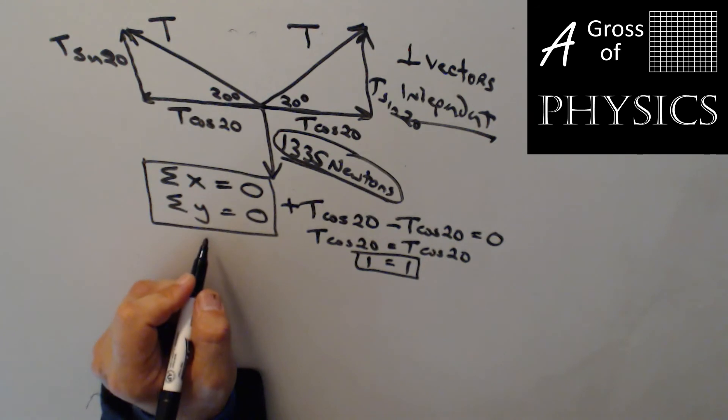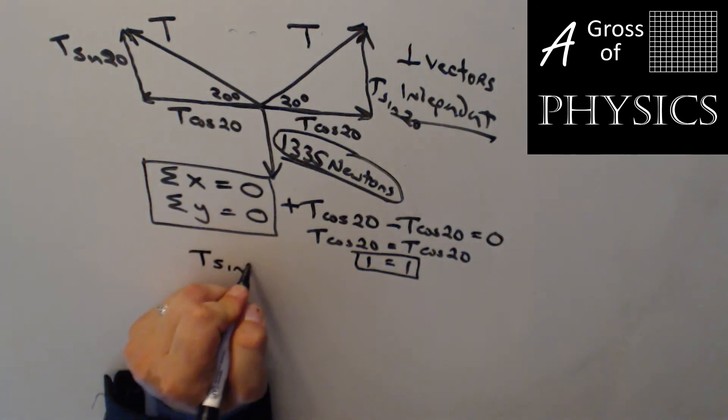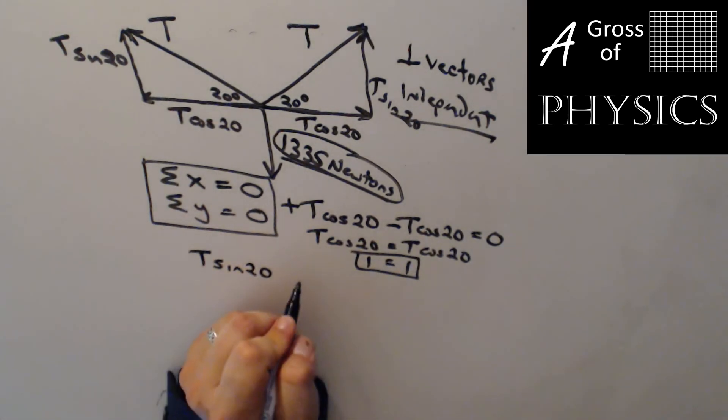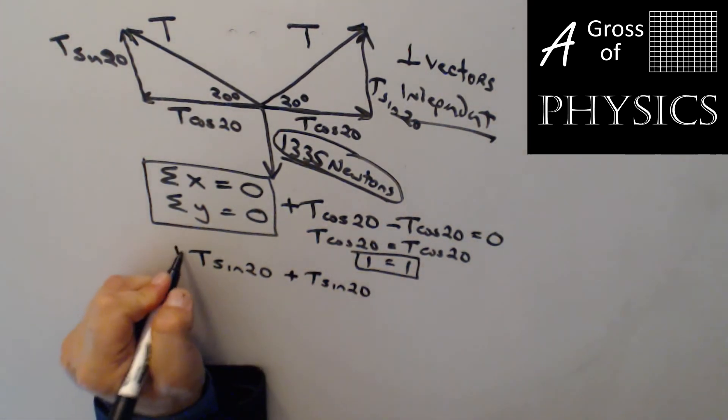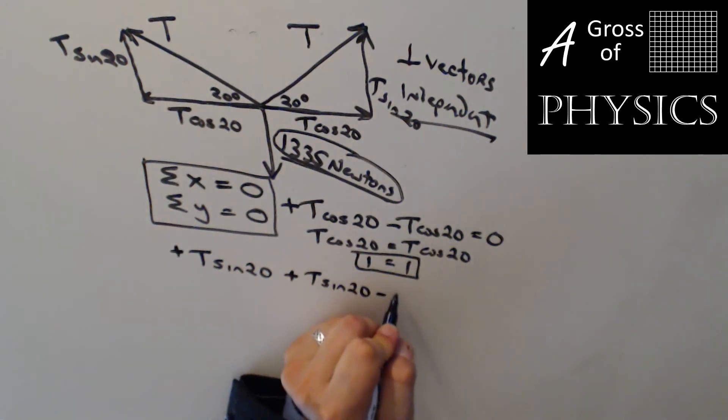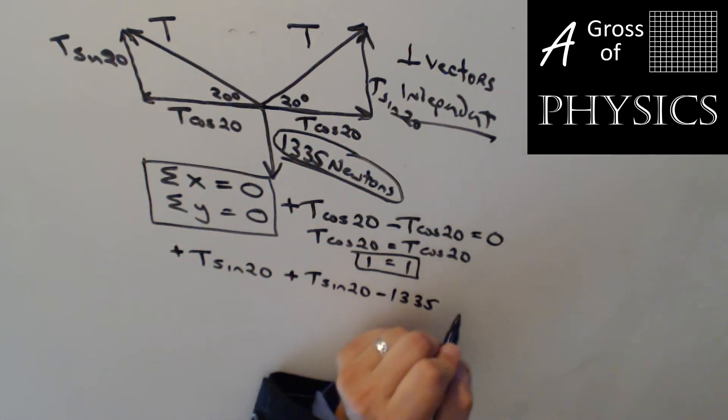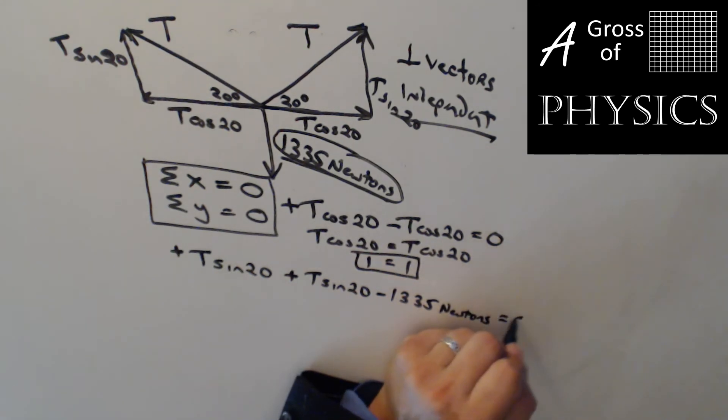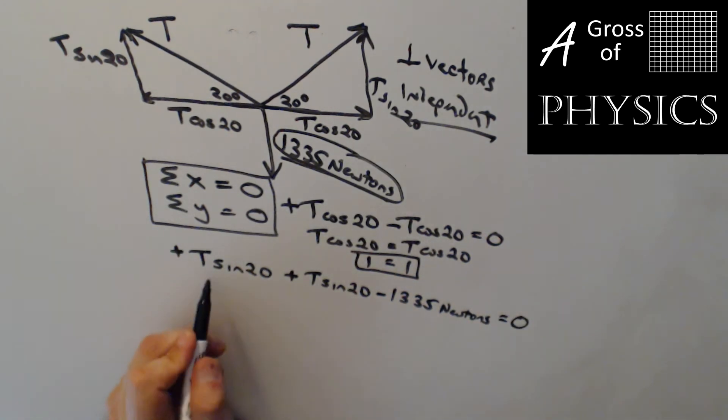Instead we need to look to the y direction and if you remember we have a t sine 20 plus t sine 20, both of those point up so they're positive, minus 1335 newtons equals zero. Well now t is our only unknown. So what I do is as follows.